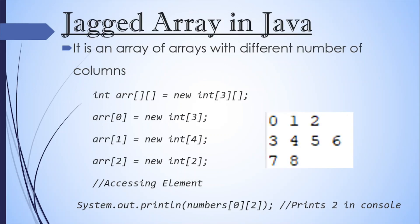Next one is jagged array. It is an array of arrays with different number of columns. So suppose we have a requirement where the number of columns cannot be same. So in this particular example, you can say the first row contains three columns, the second row contains four columns and the third row contains only two columns. So that kind of array is possible in Java and is known as jagged array. The accessing of the elements will remain same because it's index based.